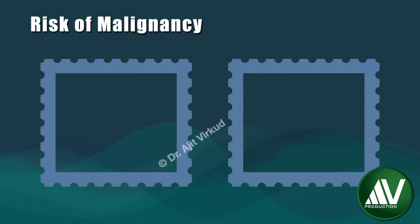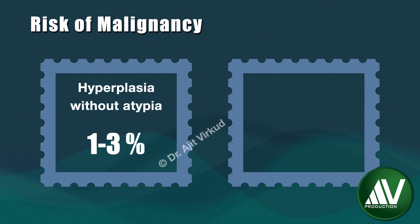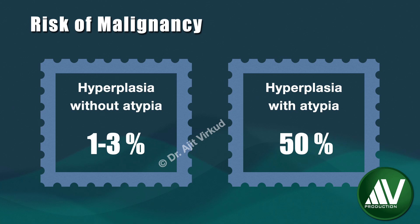Now let's see what is the risk of malignancy. Hyperplasia without atypia rarely progresses to adenocarcinoma. In these women, approximately 1 to 3 percent will develop endometrial carcinoma over 20 years. In women showing hyperplasia with atypia, up to 50% of women are found to have adenocarcinoma following hysterectomy.